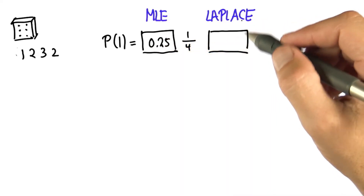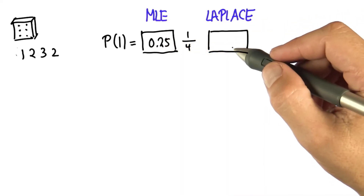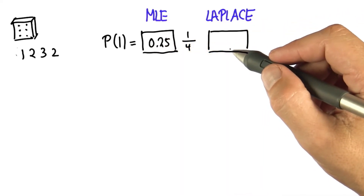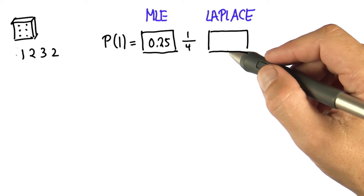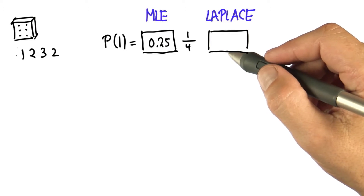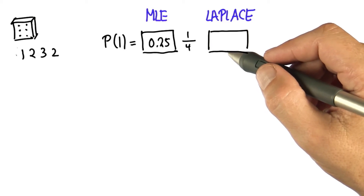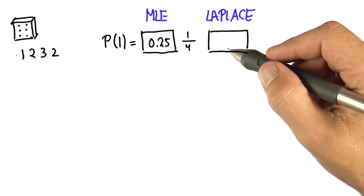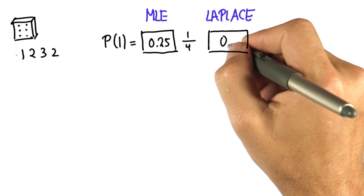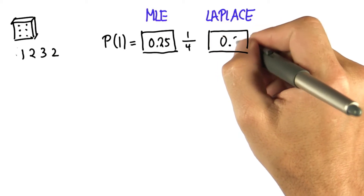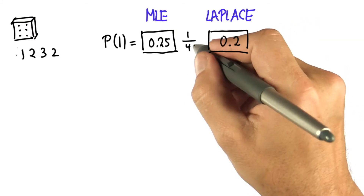And now let's move to the Laplace estimator. The way I define the fake data is that I add a data point for each possible of the six outcomes for the die. And the answer shall be 0.2.